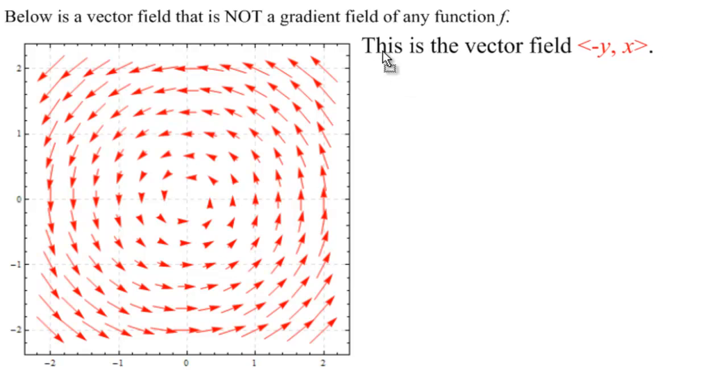This is the vector field <-y, x>. The components of the vector, minus y and x, are not the partial derivatives of any scalar function f. So this is not the gradient of any function f.